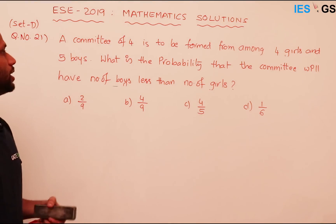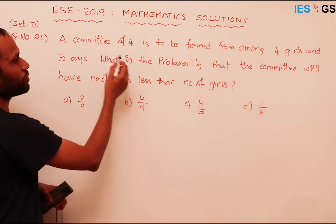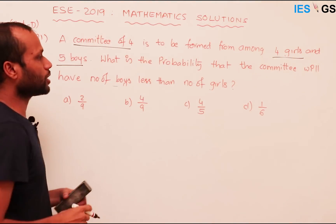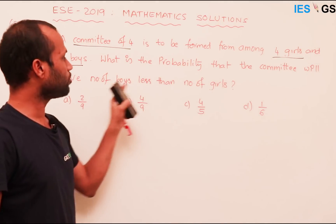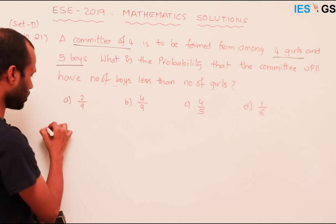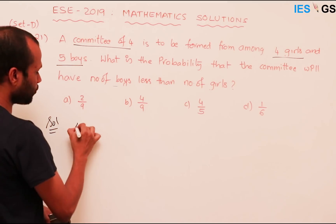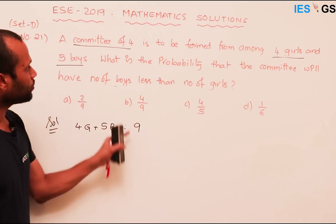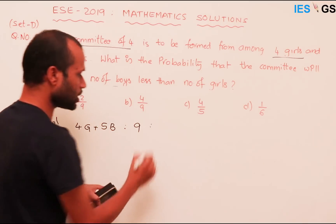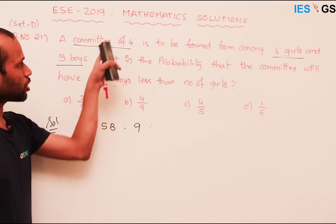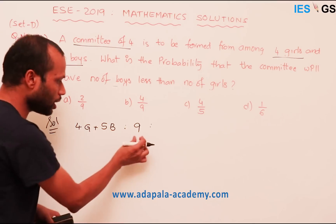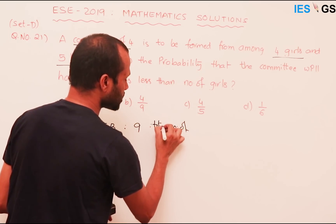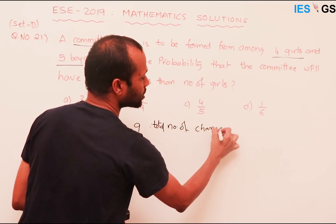Question number 21: A committee of four is to be formed from among four girls and five boys. What is the probability that the committee will have a number of boys less than number of girls? We have a total of nine people available. Out of these, we need to form a four-member committee, so the total number of possibilities is 9C4.